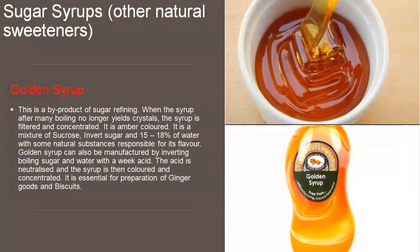Next is golden syrup, which also comes under natural sweetener sugar syrups. This is again a byproduct of sugar refining. When the syrup after many boilings no longer yields crystals, the syrup is filtered and concentrated. As the name suggests, golden syrup is amber in color. It is a mixture of sucrose and invert sugar with around 15 to 18 percent water and some natural substances responsible for its flavor. Golden syrup can also be manufactured by inverting boiling sugar and water with a weak acid. The acid is neutralized and the syrup is then colored and concentrated. It is essential for preparation of ginger goods or biscuits, giving a nice moistness and a different flavor.